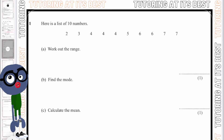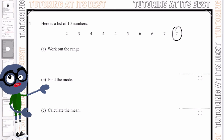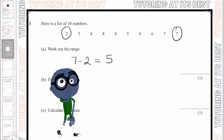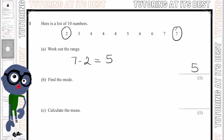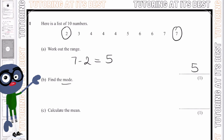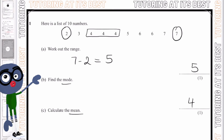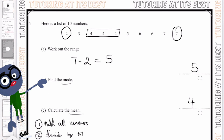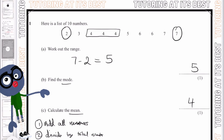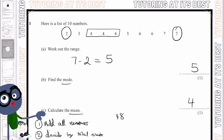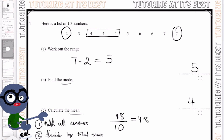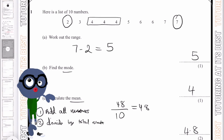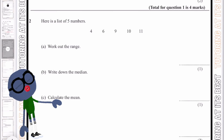Question one: work out the range — we get the largest value and subtract the smallest. That's 7 take away 2, which gives us 5. For part b, find the mode: 4 is the most common, so 4 is our mode. For the mean, we add all the numbers to get 48, then divide by 10 because there are 10 numbers, giving us 4.8.